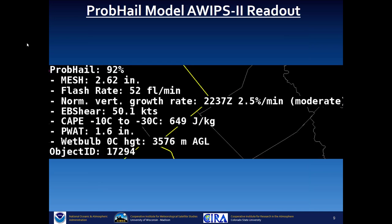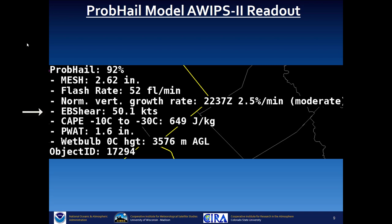The PROB HAIL readout includes MESH, flash rate from Earth Network's total lightning, and the normalized vertical growth rate from satellite — quantified as weak, moderate, or strong, or 'mature storm' if the storm has been around a long time. It also includes bulk shear, CAPE, precipitable water, and the height of the zero-degree wet bulb. The object ID identifies which radar object is being tracked.